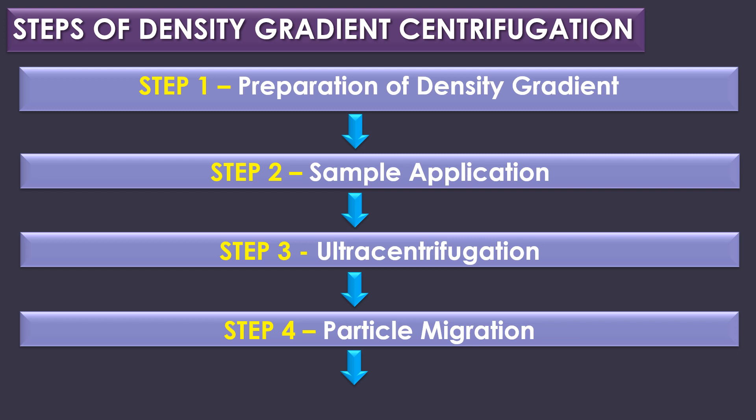Step 3 is ultracentrifugation. The tubes containing the density gradient and samples are placed in an ultracentrifuge, which is operated at high speeds to generate a strong centrifugal force, causing the particles in the sample to migrate through the density gradient. Step 4 is particle migration. As the centrifuge spins, the particles begin to migrate through the density gradient; the rate of migration is determined by the relative density of the particles compared to the surrounding medium. Heavier particles settle towards the bottom of the tube, while lighter particles remain suspended at higher levels within the gradient.